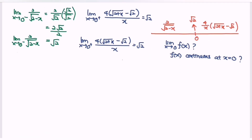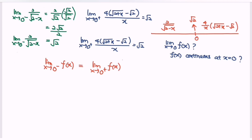The left-hand limit equals the right-hand limit for f(x) as x approaches 0. The answer is yes — they are the same. So the limit when x approaches 0 for f(x) gives y approaching square root of 2, meaning that the limit exists.